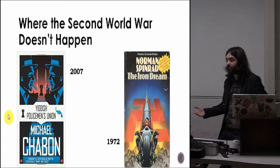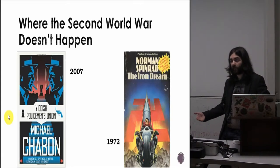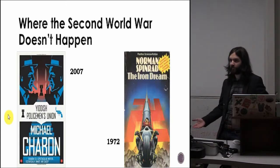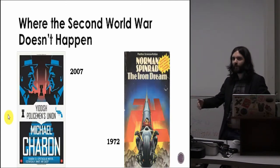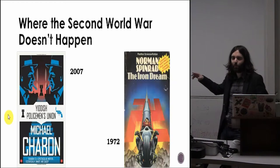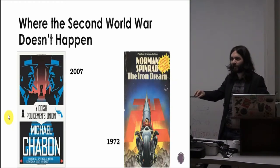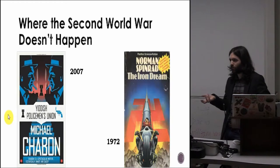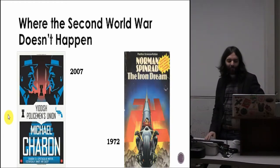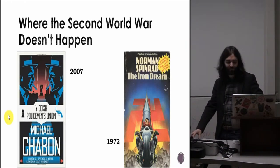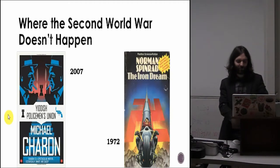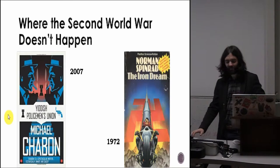Hitler's political career never really takes off, so he pursues his other love — which we all know was art. He emigrates to America, becomes an artist, then an artist for pulp magazines, then a writer of pulp short stories. This book is actually Norman Spinrad presents Adolf Hitler's The Iron Dream — a novel that Hitler supposedly wrote that won the Hugo Award. It is bonkers. It's also out of print; I don't think they'd know how to market it. You can pick it up really cheaply everywhere though. I had great fun writing about that, but unfortunately it isn't one I'm here to talk about today.